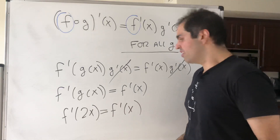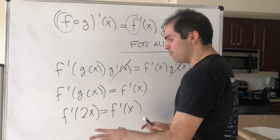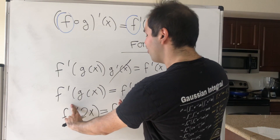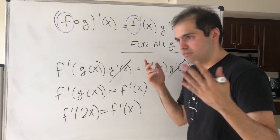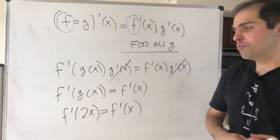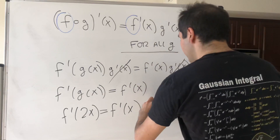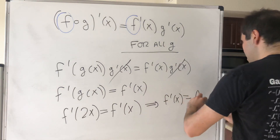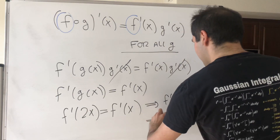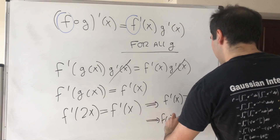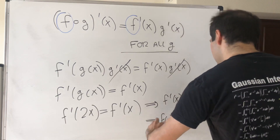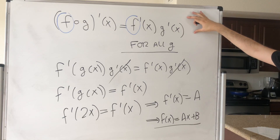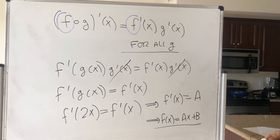I have addressed that in another video. If a function is continuous and satisfies f of 2x equals f of x for every x, then that function must be constant. So what we get is that f prime of x is a constant — let's call it a — and so f of x is just ax plus b.